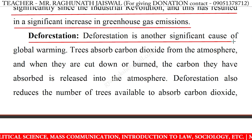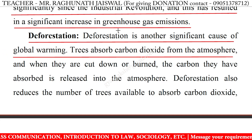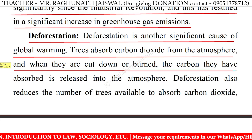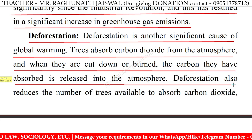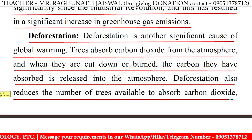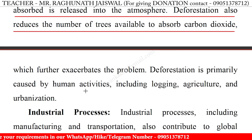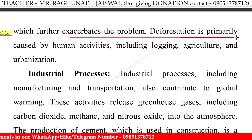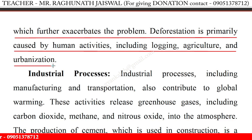Deforestation. Deforestation is another significant cause of global warming. Trees absorb carbon dioxide from the atmosphere and when they are cut down or burned, the carbon they have absorbed is released into the atmosphere. Deforestation also reduces the number of trees available to absorb carbon dioxide, which further exacerbates the problem. Deforestation is primarily caused by human activities including logging, agriculture and urbanization.